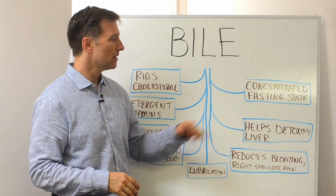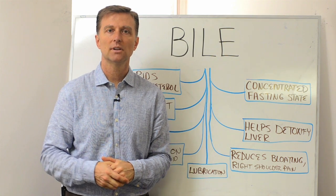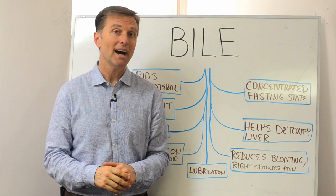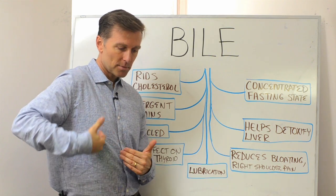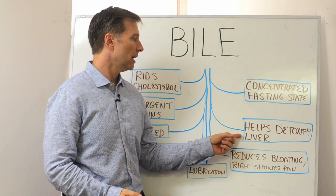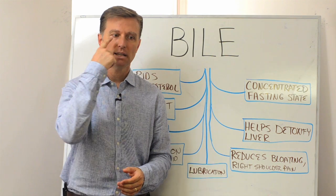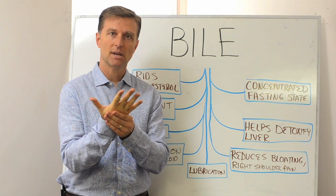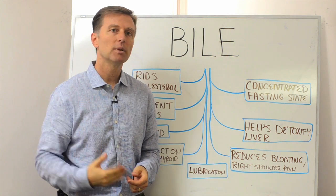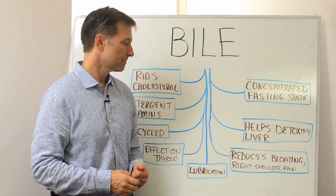The other purpose of bile is it helps to detoxify the liver. A lot of the toxins that come through the liver come out through the bile ducts. So without a bile duct or without the proper flow of bile through the bile ducts, your toxins are going to back up in the liver. So you might get yellow of the whites of the eye. Even the skin might get too yellow. You might feel toxic. So we need that gallbladder and that bile to help toxins go through the body.